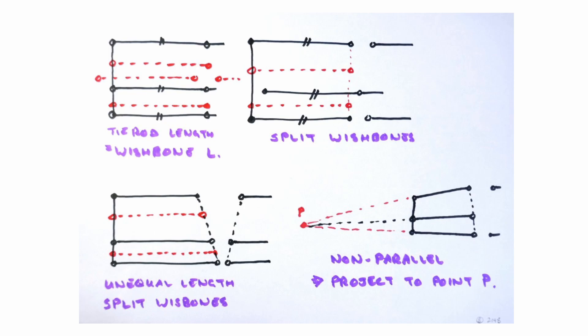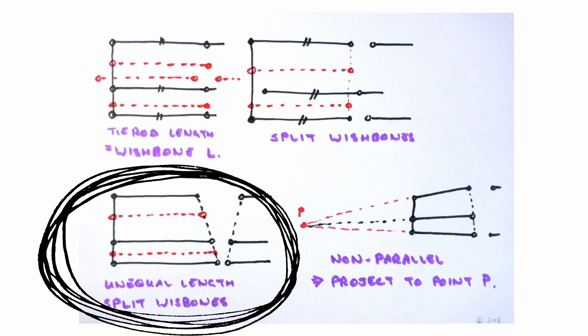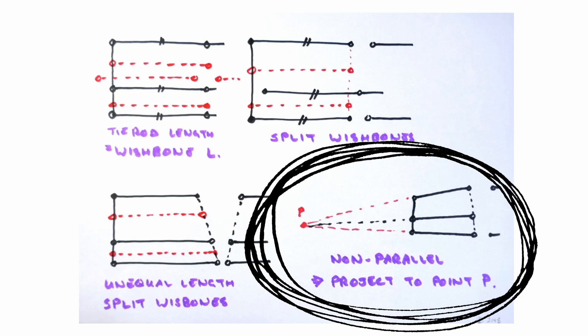For designs with split wishbones the same rule applies. If the two wishbones and the tie rod are of the same length the steering angle will not be affected by lean. If the wishbones are of unequal length but parallel the length of the tie rod can be derived as shown in the graphic. If the wishbones are of unequal length and not parallel the angle and length of the tie rod is derived as shown.